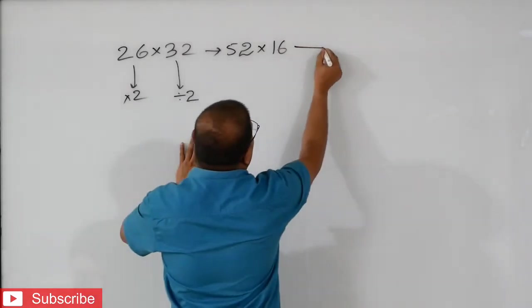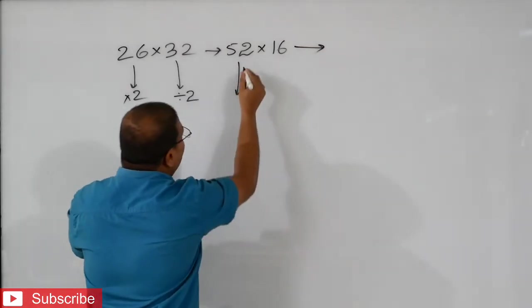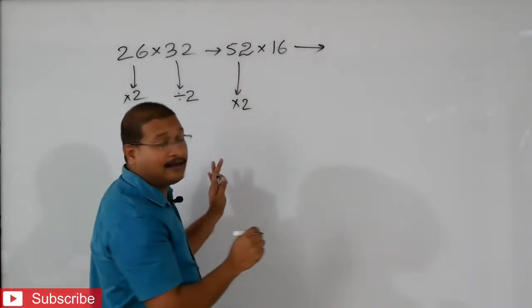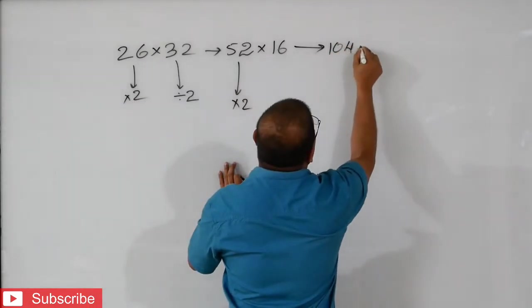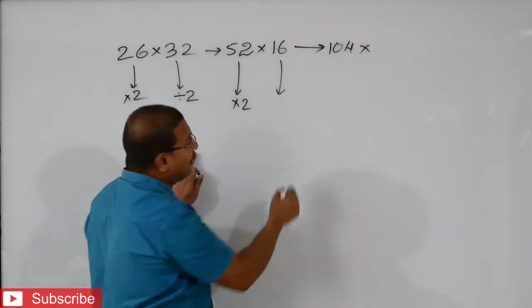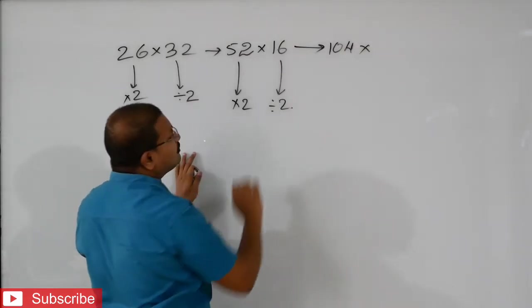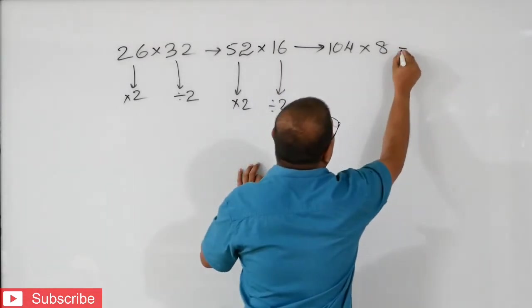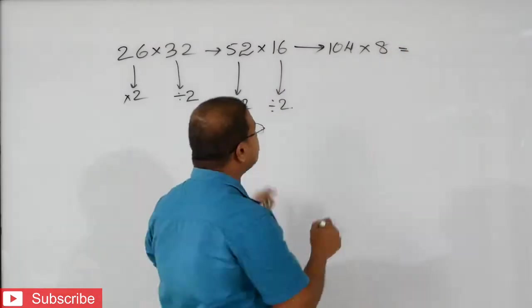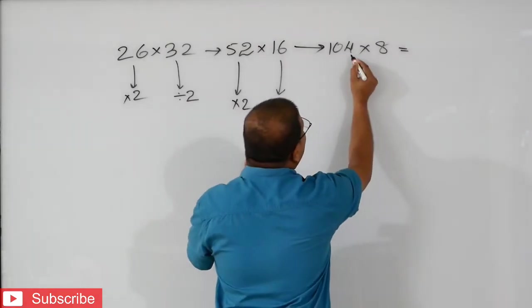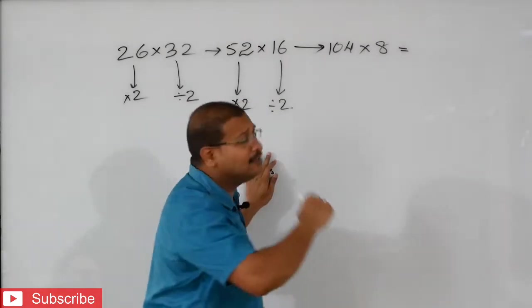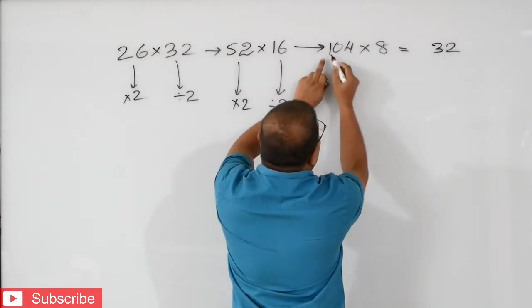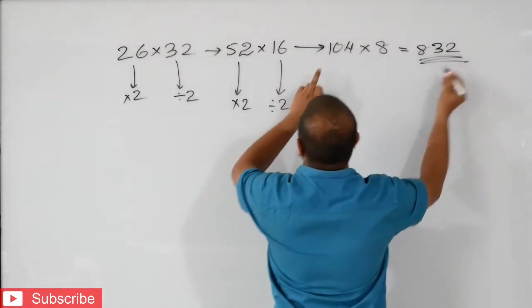While looking at 52 into 16, it is not very easy. So we will continue again. Again, we will take double of this: 52 into 2 gives 104. And half of 16 divided by 2 — that means half of 16, that is 8. Now I feel it will be easy for you to multiply. Now, 8 into 4 is 32. So we can write direct 32 because 0 is here. After that, 8 ones are 8. This is your answer.